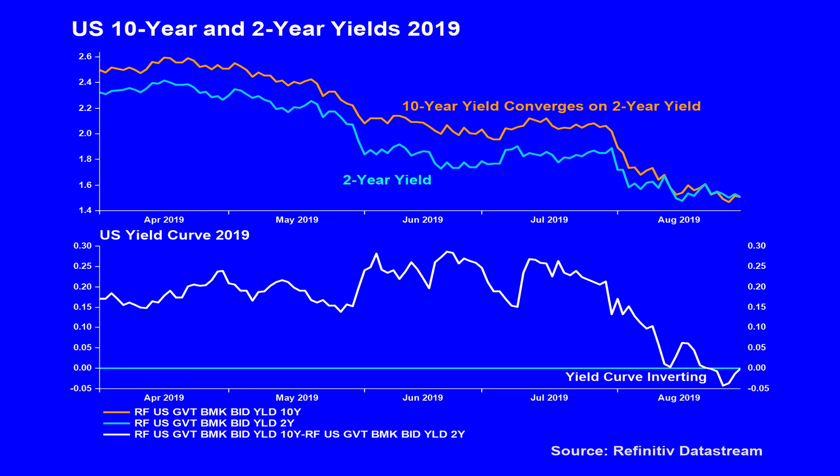Now, people will often say that the yield curve predicts a recession, but this inversion in no way predicted the onset of Covid. The curve had inverted because of demand from global, systematically important banks switching loans into bonds on their balance sheets in order to reduce their regulatory burden. If the yield curve had predicted the recession, it did so unknowingly.